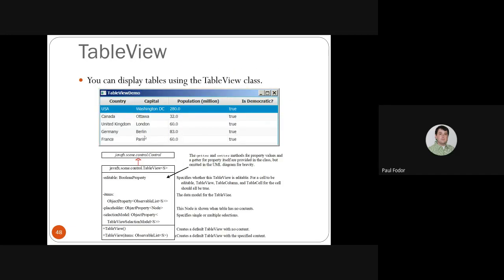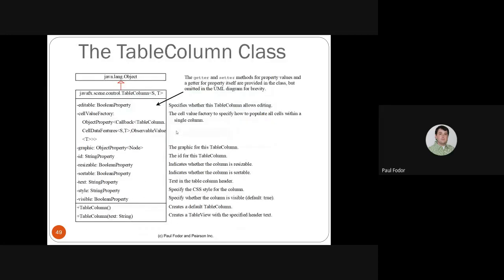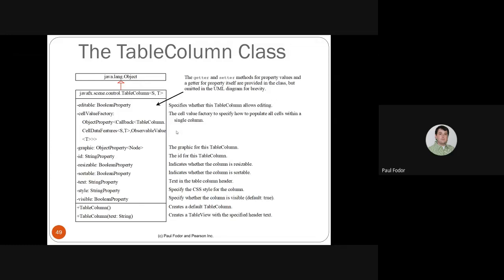A table view is one of the most complicated UI types because it uses the Model-View-Controller design pattern. The model contains the actual values represented in the table, the view is the table with column headers and content, and the controller is the event handlers for updating the model and view. A table contains table columns, which contain cells, and each cell may have an event handler. I will only show the UML diagrams of the two classes, not the implementation.